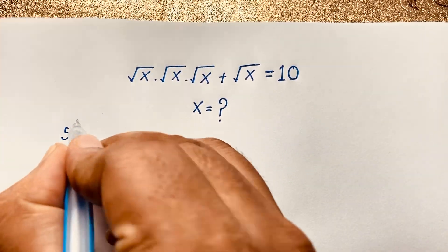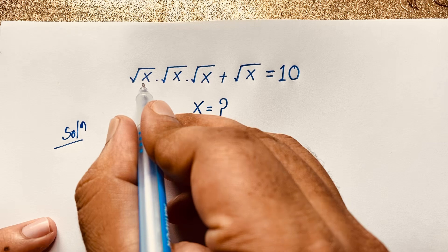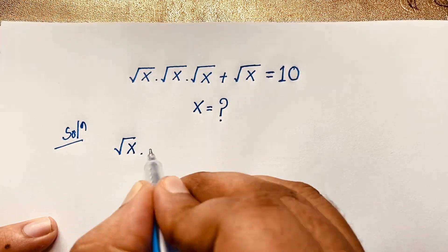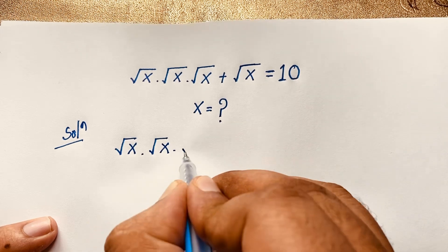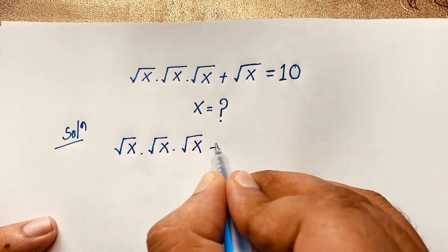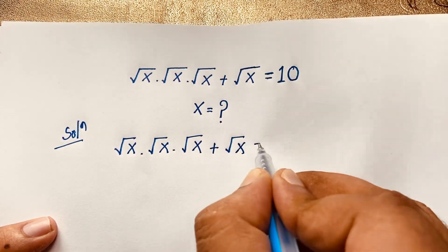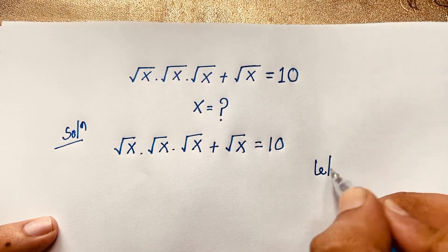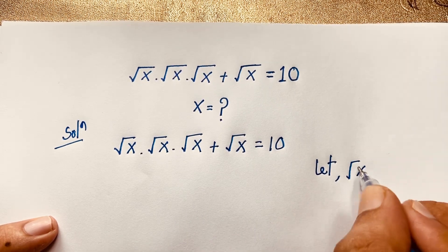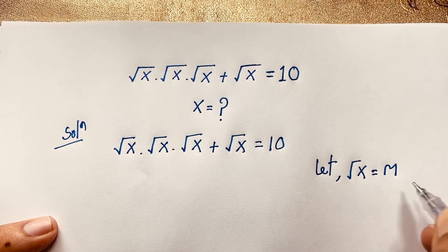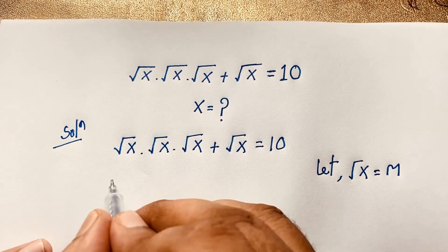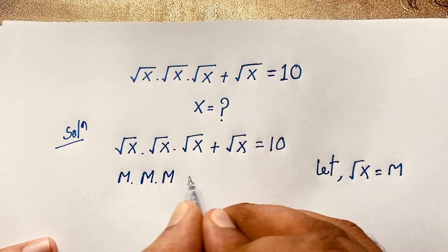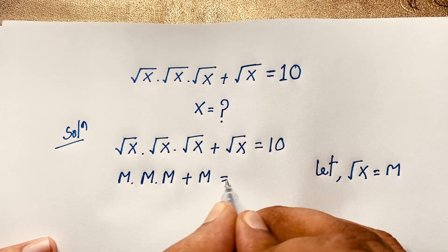Here is our math solution. I take our question: square root x times square root x times square root x plus square root x is equal to 10. So here, let square root x equal m.